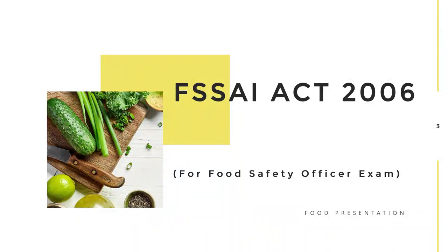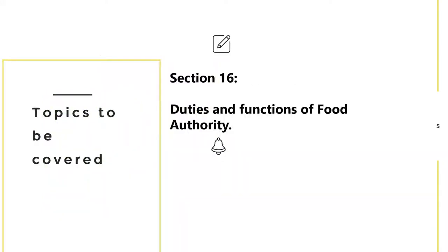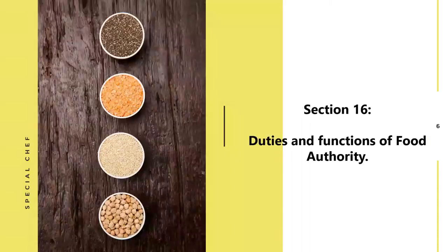This lecture is especially for Food Safety Officer exam and Technical Officers exam. Here we cover Chapter 2 of the FSSA Act. Chapter 1 is already done. We have almost finished all topics of Chapter 2. Today's topic is very important and divided into two parts because it is lengthy — first part today, second part tomorrow. Section 16 is the last section of Chapter 2, and we are going to discuss the duties and functions of the Food Authority.